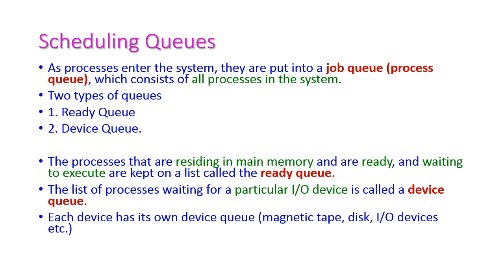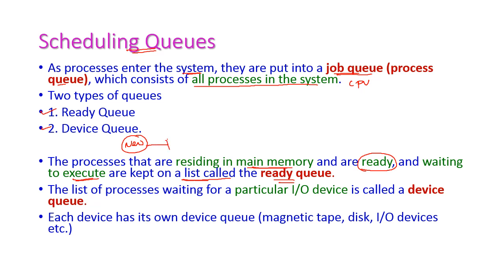When a process enters into the system, the process will be put into a queue which is called the job queue or process queue. This queue consists of all processes in the system that are ready to execute on the CPU. There are two types of queues: ready queue and device queue. A process that is residing in main memory and is ready and waiting to execute is kept in a list called the ready queue.